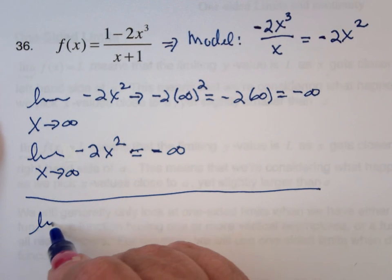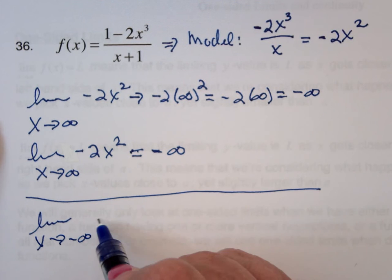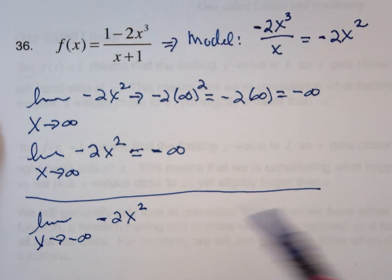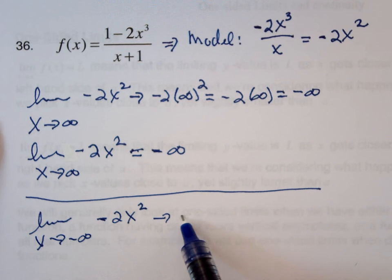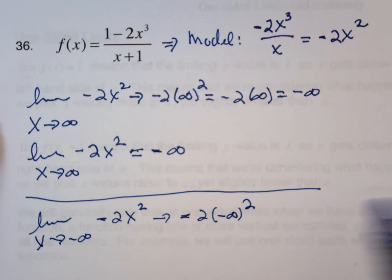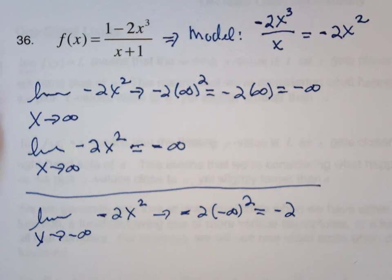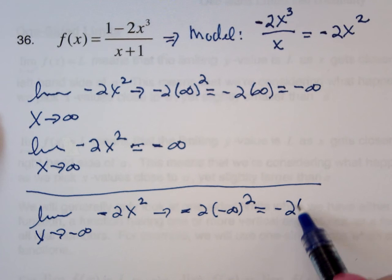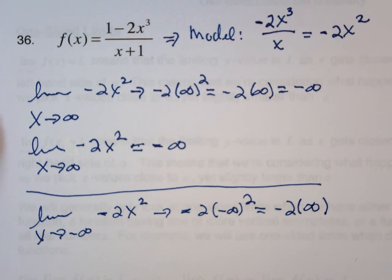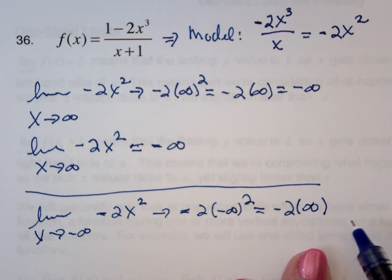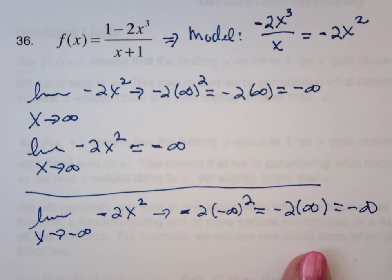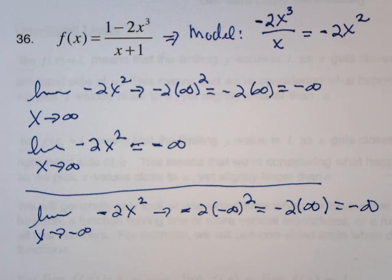And then if I look at the limit as x goes to negative infinity of negative 2x squared, this is negative 2 times negative infinity squared, which is negative 2 times, what's negative infinity squared? So it says this is also going down. So whatever is happening on either side, the arrows are pointing downward, and there's something going on in the middle, don't know what, but at least the arrows are going down.